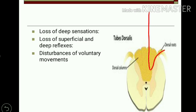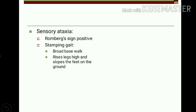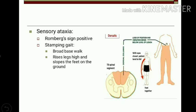There is also loss of superficial and deep reflexes because sensations are lost, and the reflex arc requires the sensory pathway. When sensory pathways are damaged, the reflex arc cannot be completed. There is also marked disturbance of voluntary movement, as motor neuronal action requires completion of the reflex arc. Another clinical feature is sensory ataxia — lack of coordination of voluntary movement — resulting from damage to the dorsal column pathway.